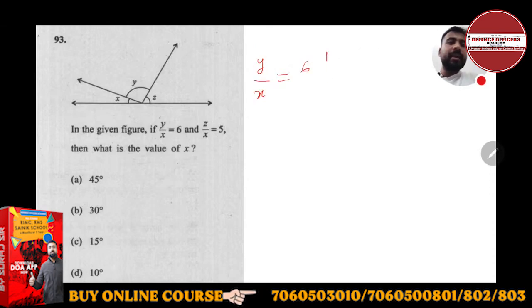y upon x is given as 6, and z upon x is given as 5. If you want to write this in ratio concept, y is to x will be 6 is to 1.